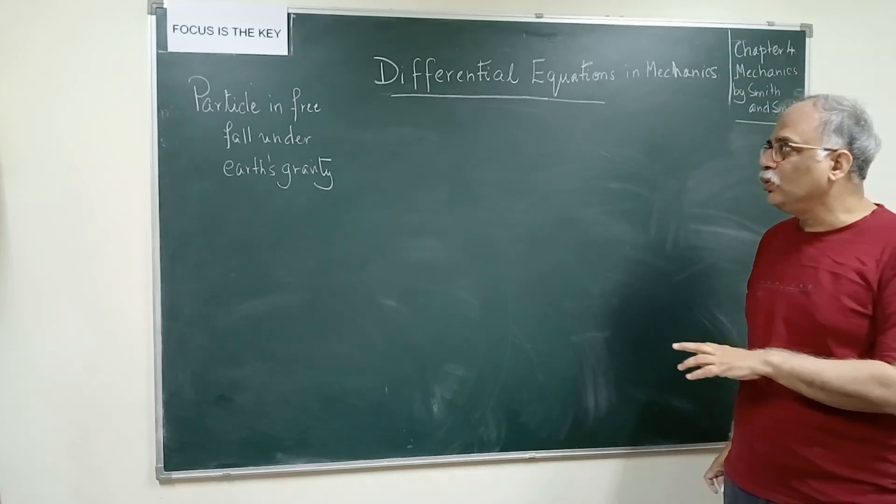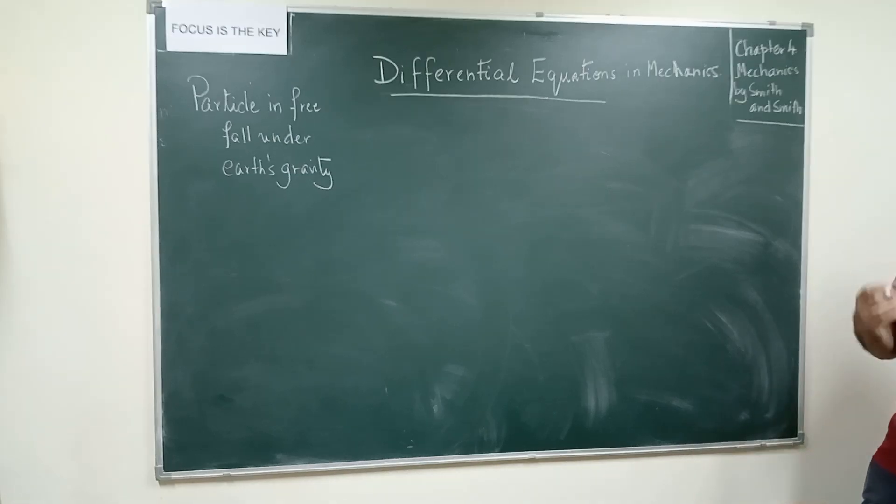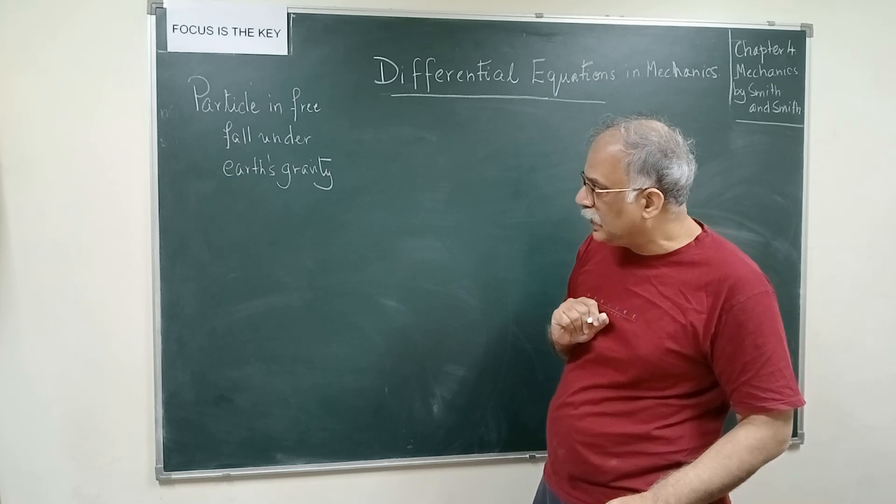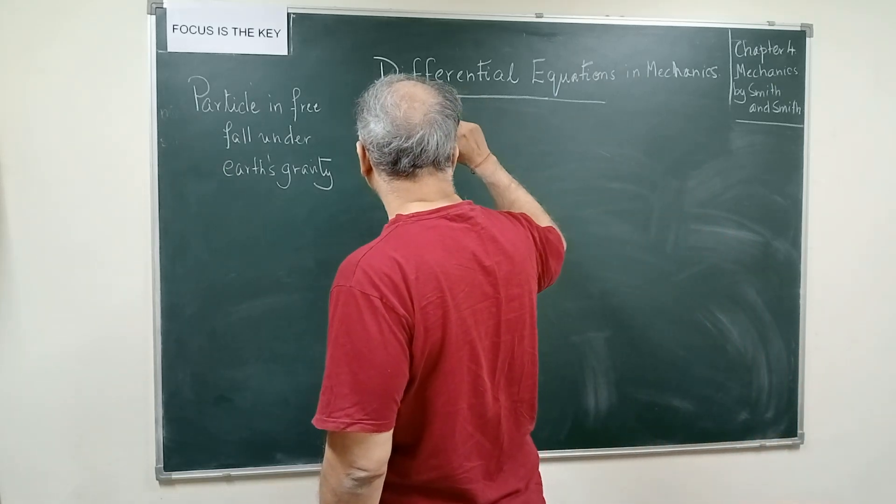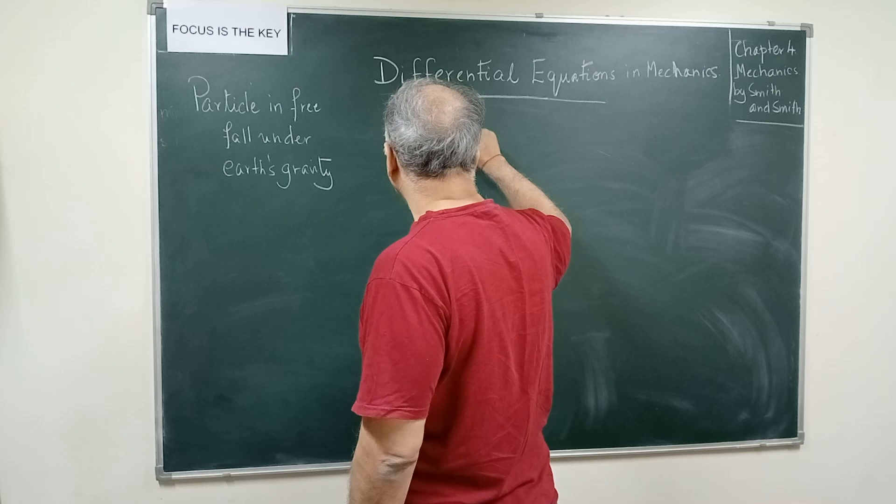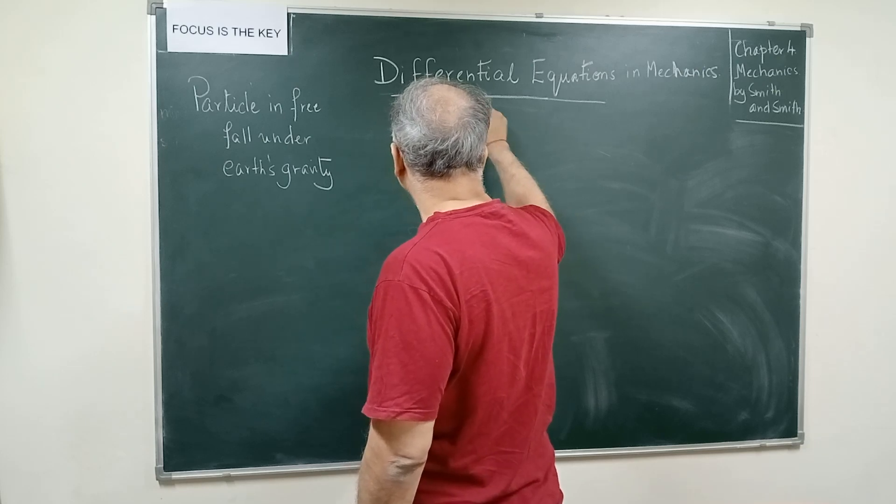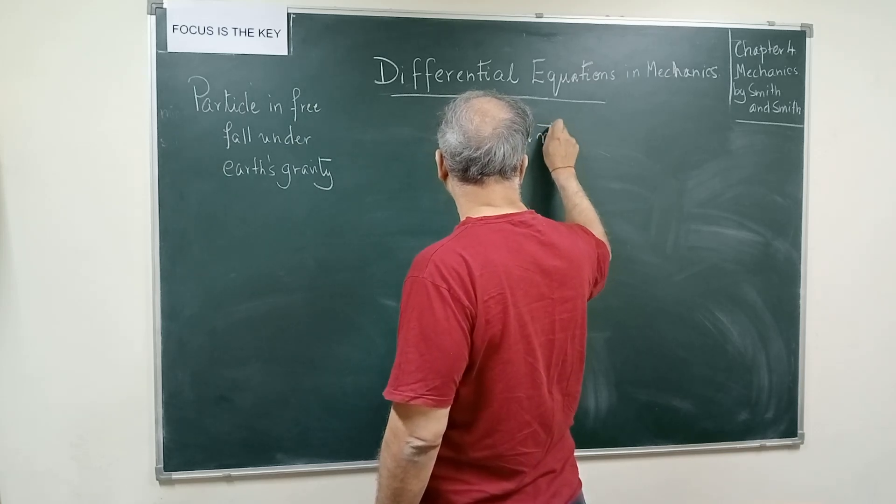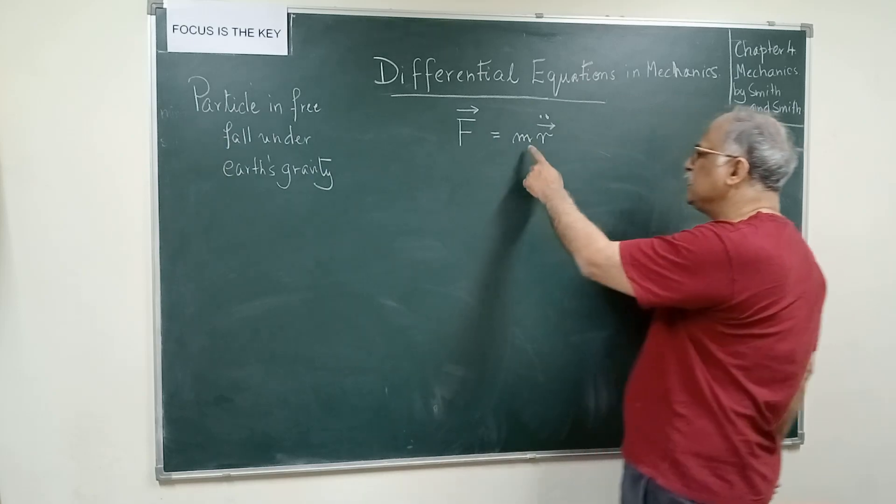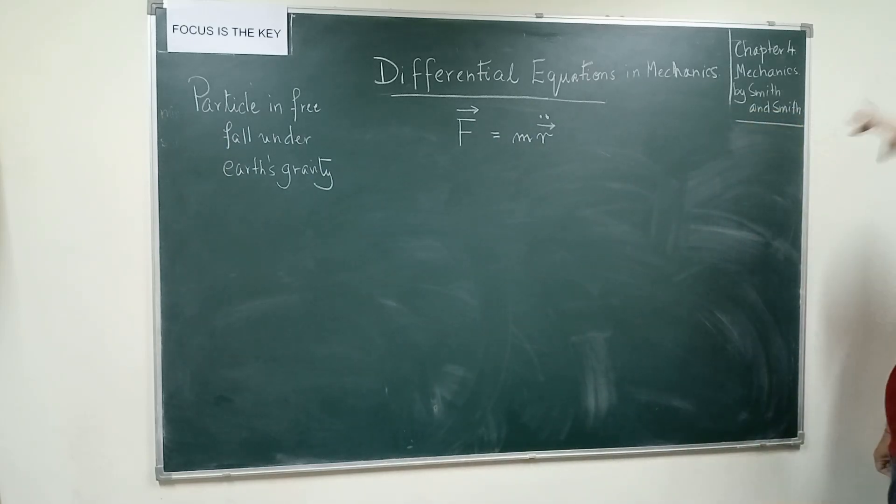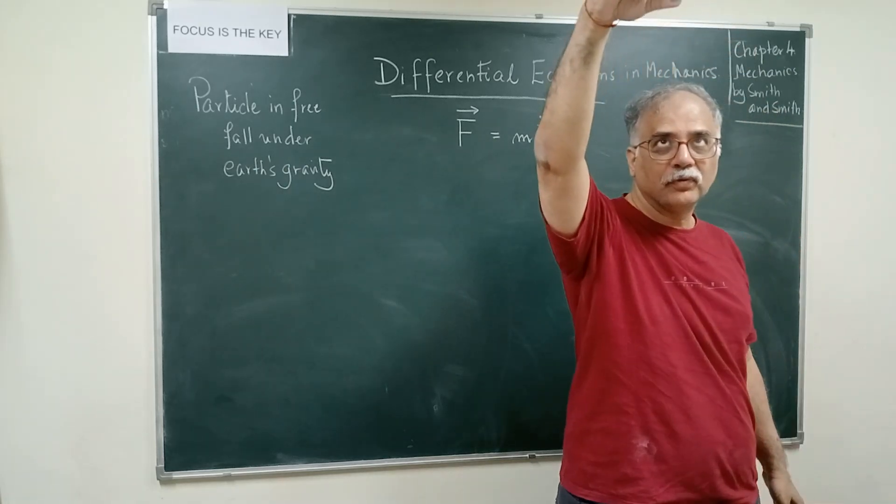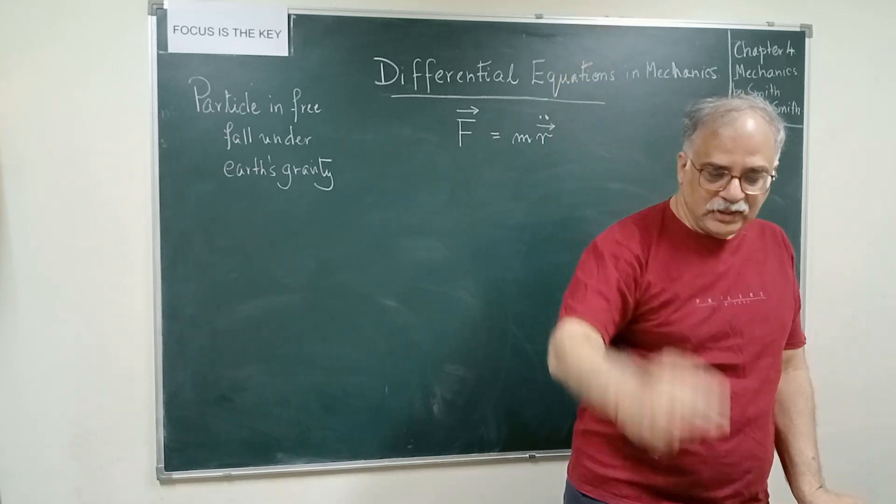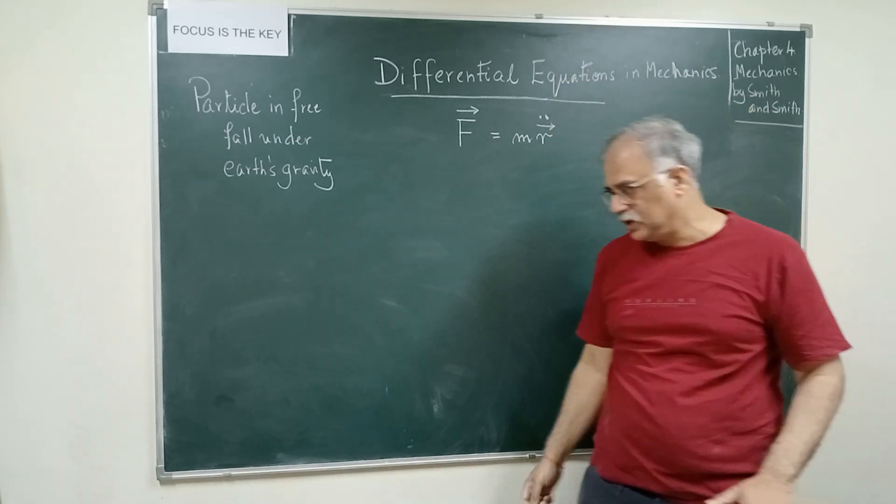Here we have to be clear that whenever we are talking about Newton's second law, we shall always express it in the form of a vectorial equation. m is the mass of the particle under motion. Suppose I am just dropping a stone or suppose I drop a chalk from here. I just leave it, it falls here. So what is the distance travelled here? That's the question, for example.